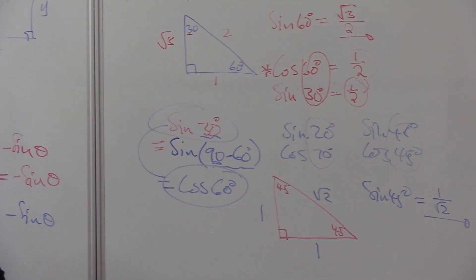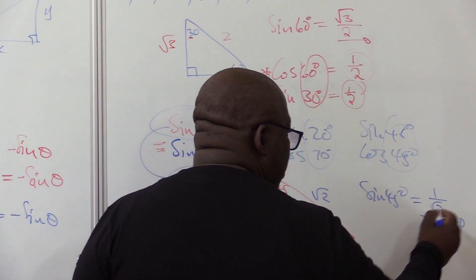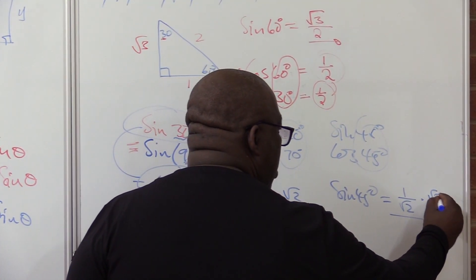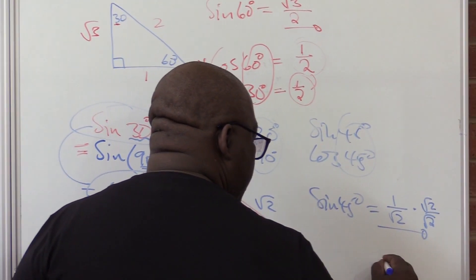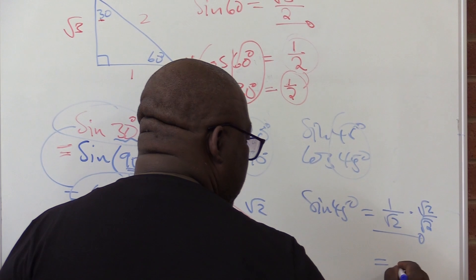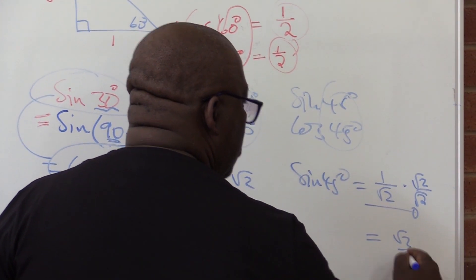We want you to rationalize the denominator. If you want, this is the same as if I multiply this by root 2 over root 2. This is the same as this times that, it is root 2 over 2.